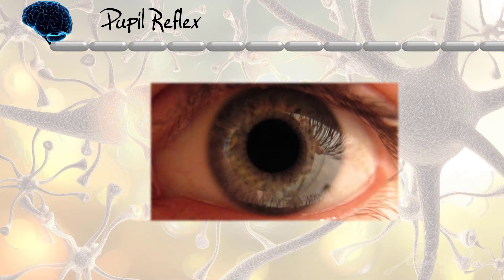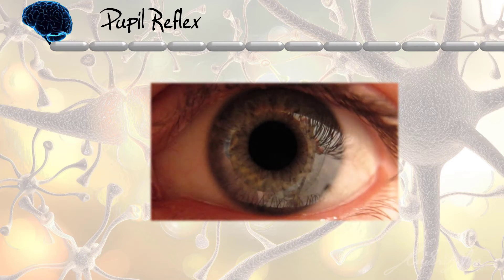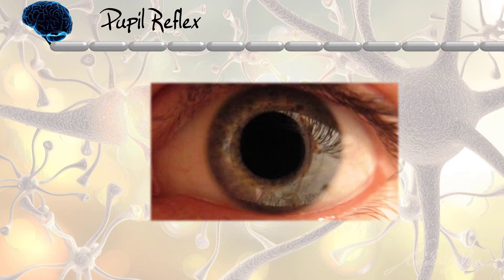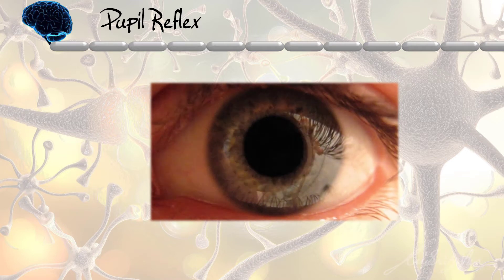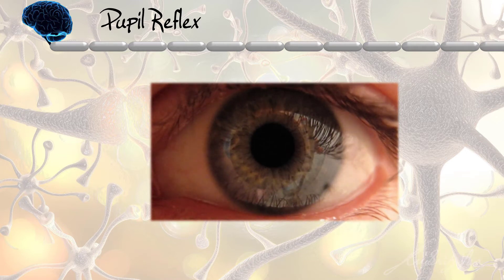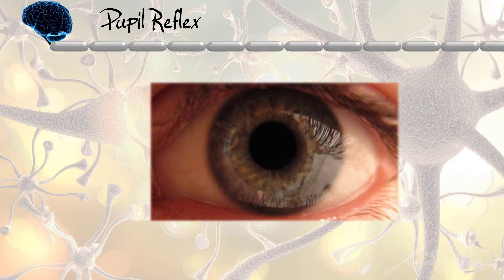If you have a friend lying around, you can take your handphone and switch on the light. Shine the light into your friend's pupil or eyes, then you will see the pupil shrinking. So how does this come about?